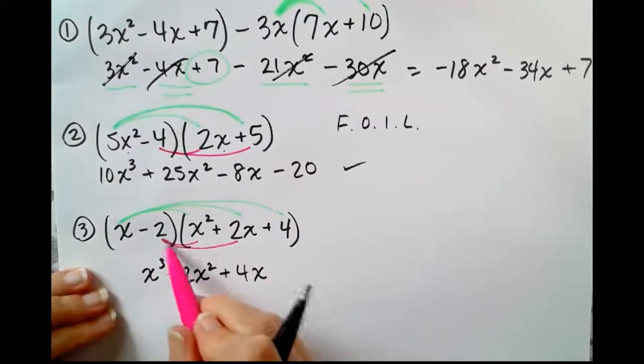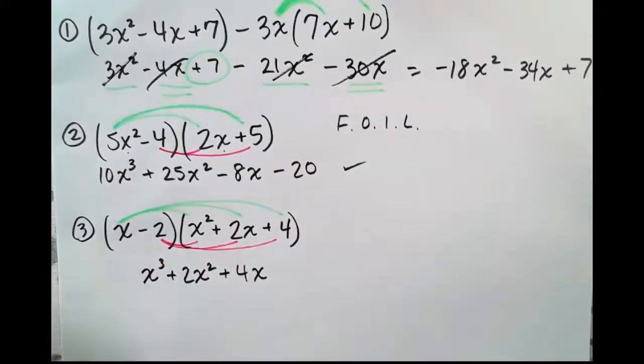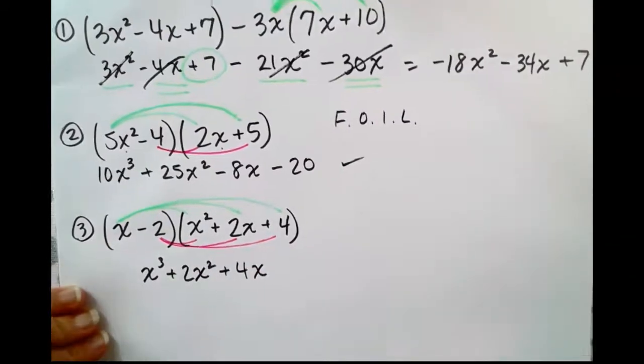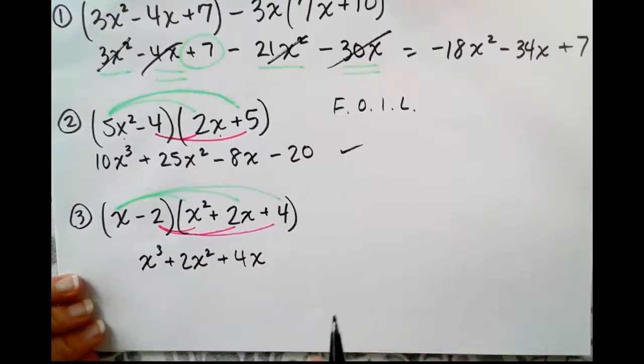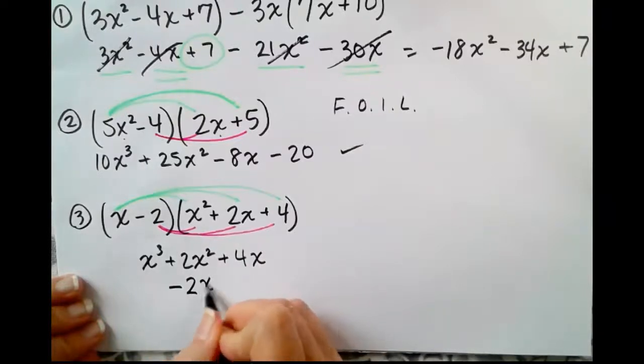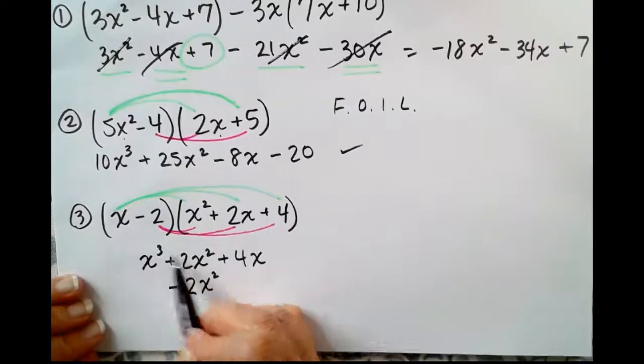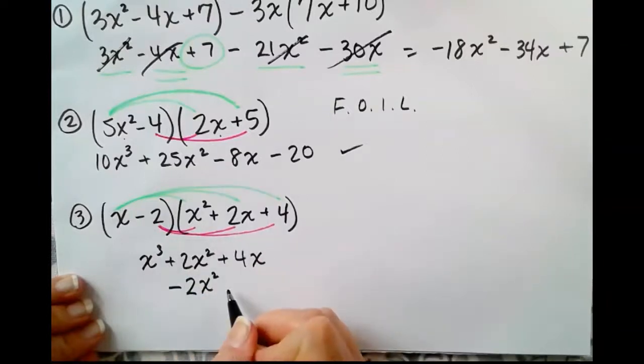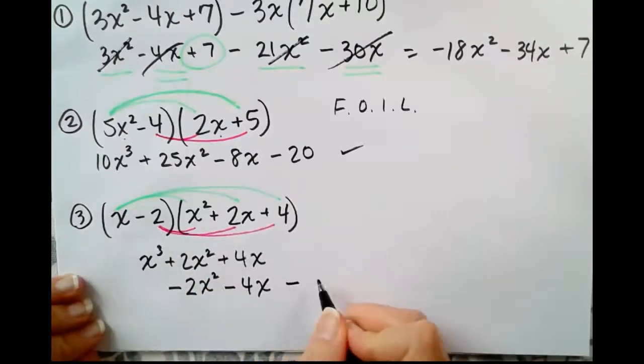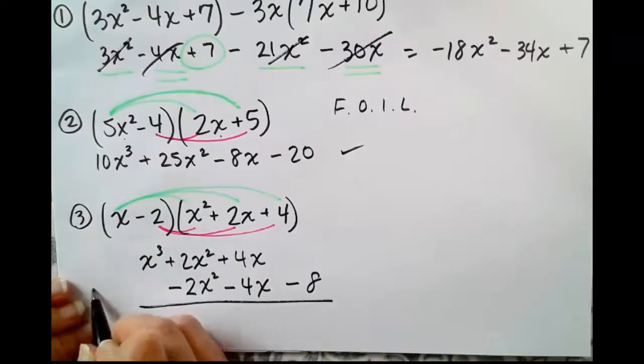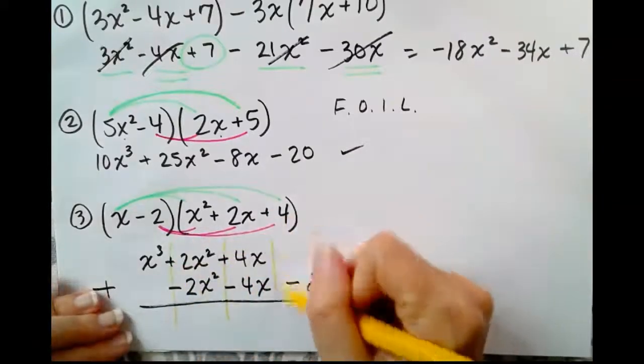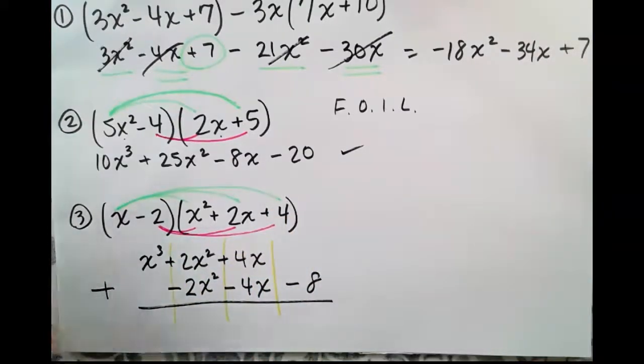Now, we're going to take the negative 2 through. But this time, I'm not going to write them out horizontally. I'm going to vertically stack my like terms here to make it easier in the end. Negative 2 times x squared is negative 2x squared. Negative 2 times positive 2x is minus 4x. Negative 2 times positive 4 is negative 8. When we add the like terms and the like terms are stacked on top of each other vertically here, something amazing happens.